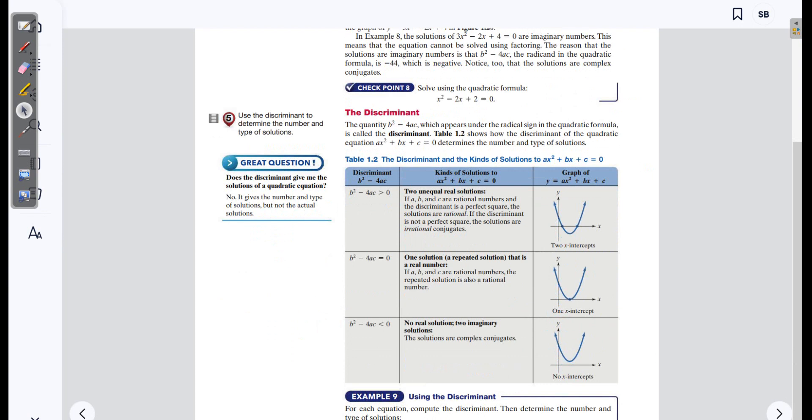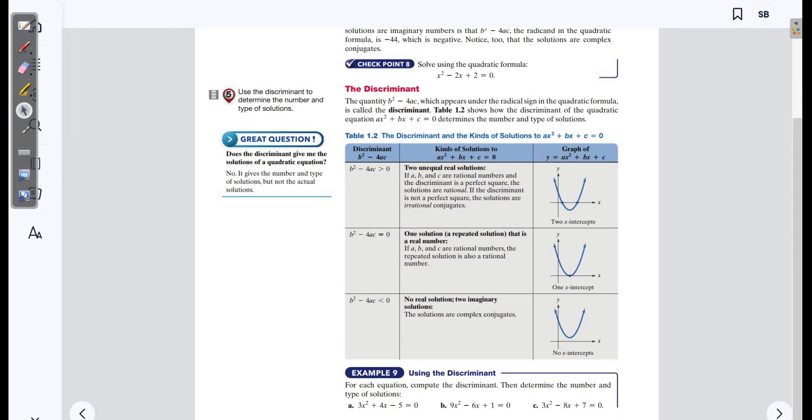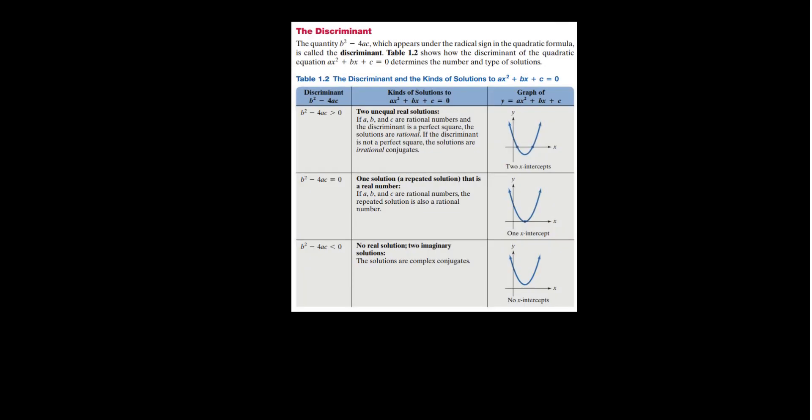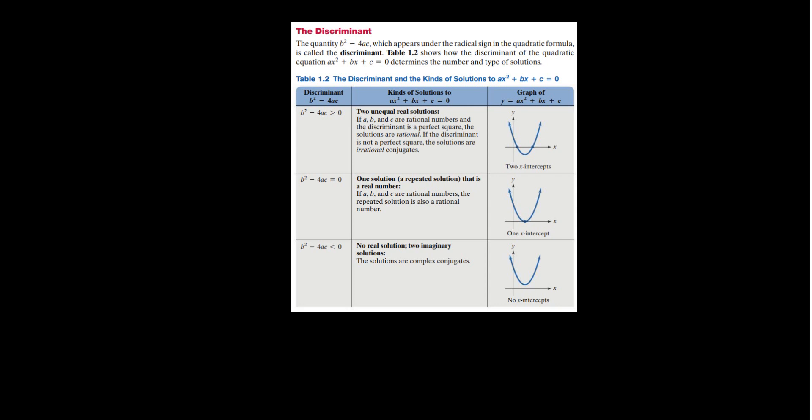Next up: the discriminant. The discriminant is b squared minus 4ac — that expression inside the radical of the quadratic formula. There are three possibilities for b squared minus 4ac: it can be positive, negative, or zero. If it's greater than zero, we have two real solutions. That makes sense — on the last example, what was inside the radical was greater than zero and we had two real solutions.